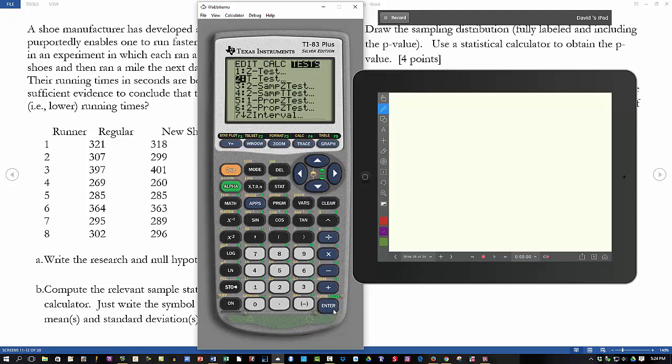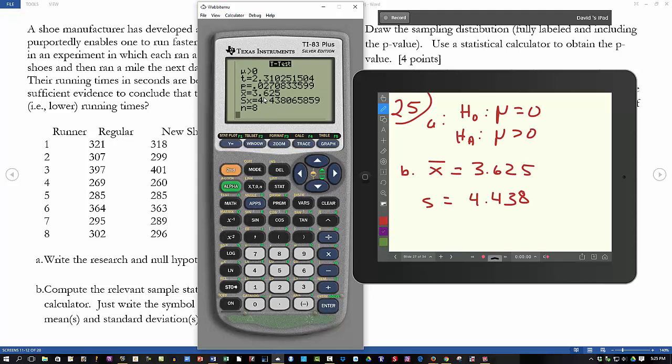I'm going to go to the one sample t-test. I'm going to input data. My mu-zero is zero. My data are in list three. That's where I put those differences. And this is going to be greater than. And then calculate. And among the things you'll see there is an x-bar of 3.625 and a standard deviation of 4.438.